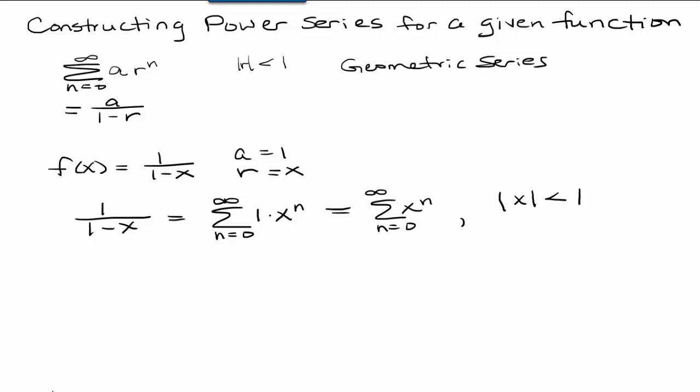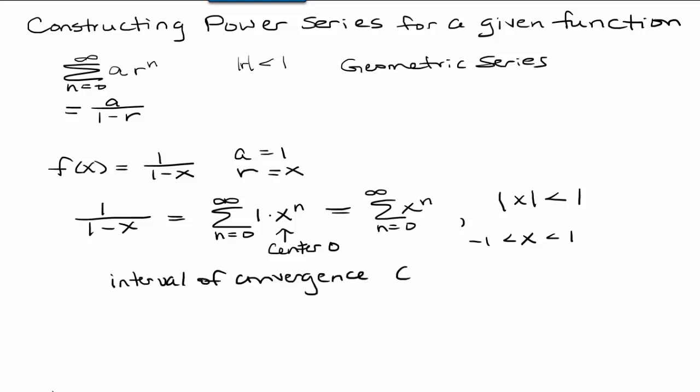In other words, if we're talking about the radius of convergence of this power series, it's 1. This is a power series which has a center at 0 since nothing is being subtracted or added to x. So our center is 0, radius is 1, x is between negative 1 and 1. So our interval of convergence is negative 1 to 1, and this function f of x is equal to this power series on the interval from negative 1 to 1.